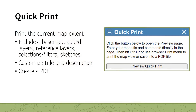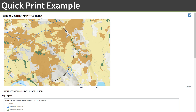To create a PDF of the current map extent, open the QuickPrint tool. The PDF map includes elements such as the base map, added BIOS layers, reference layers, and features highlighted through selections. When you are ready to print, press the Preview Quick Print button. The Quick Print preview will open on the top of the map frame. Before printing, you have the option to edit the map title and enter a description. Simply click on the title or the description to edit the text. The map legend is displayed on the bottom.